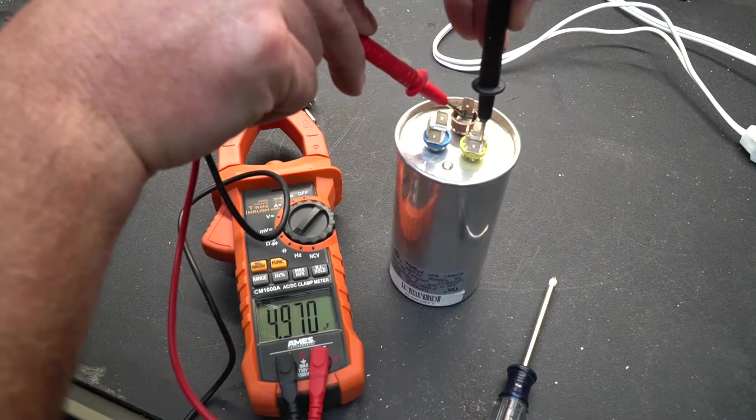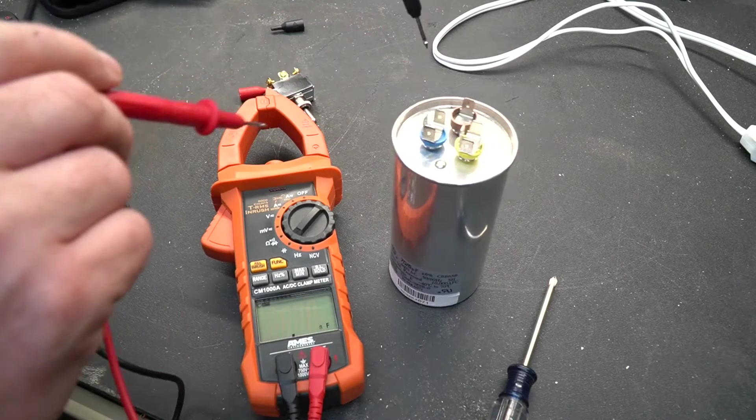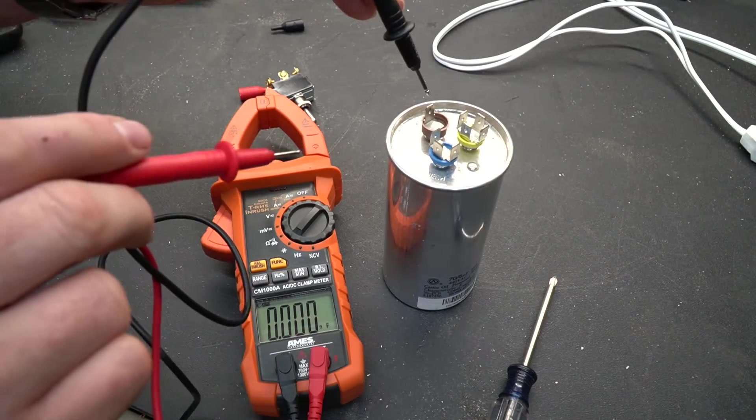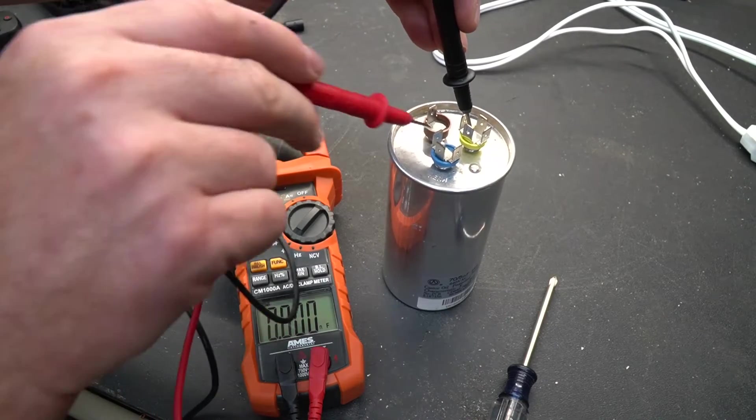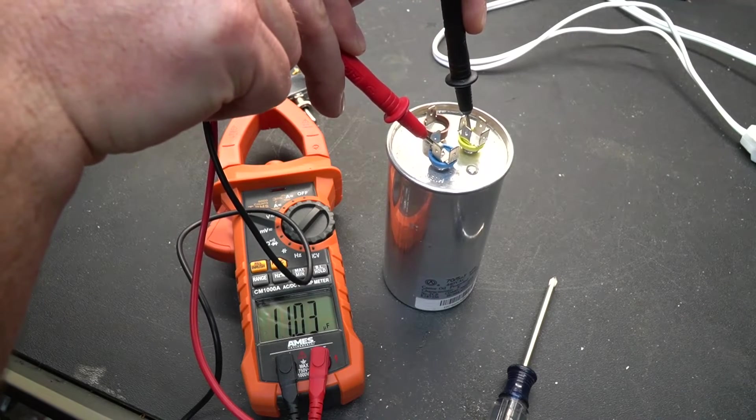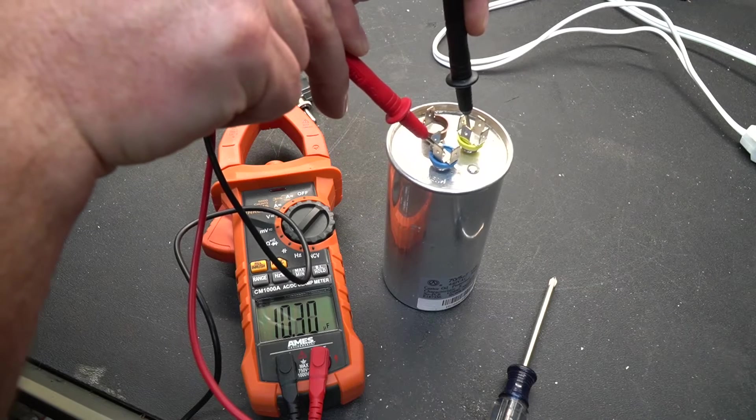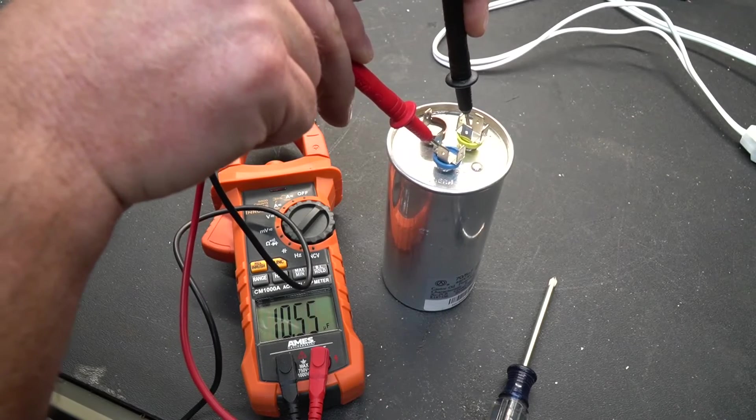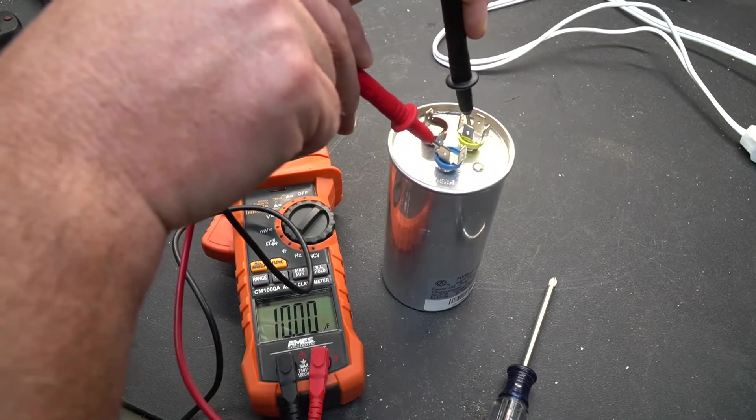And then if we measure the other capacitor that's built in here which is for the compressor it should be 70 and you're going to see we're not going to get 70 on it. It's 11.03 and the compressor would not start with this capacitor. I used this meter to check it. I put a new capacitor on it and the air conditioner has been running just fine.